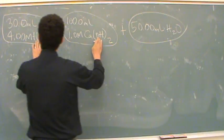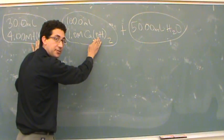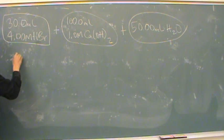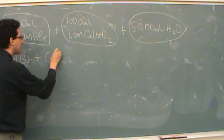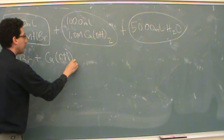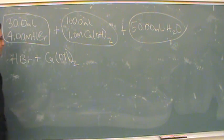Let's see what reaction occurs when these are mixed first. HBr plus calcium hydroxide. What would we call this reaction? How would we classify it?